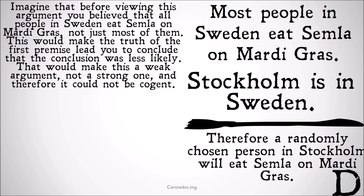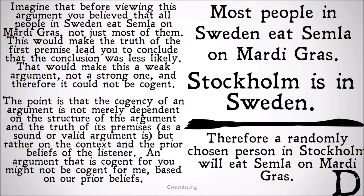For example, imagine that before viewing this argument, you believed that all people in Sweden eat semla on Mardi Gras, not just most of them. This would make the truth of the first premise lead you to conclude that the conclusion was less likely than you did before. That would make this a weak argument, not a strong one, and therefore it would not be cogent, because a cogent argument must be a strong argument with true premises.